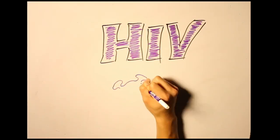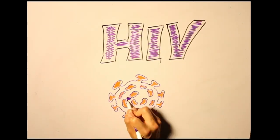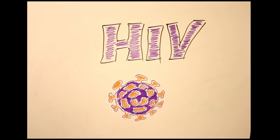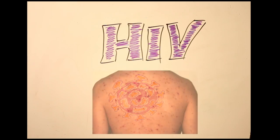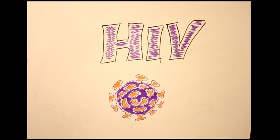HIV is a lentivirus that causes acquired immunodeficiency syndrome, AIDS for short. This is a condition in humans that causes progressive failure of the immune system, allowing life-threatening opportunistic infections and cancers to thrive.